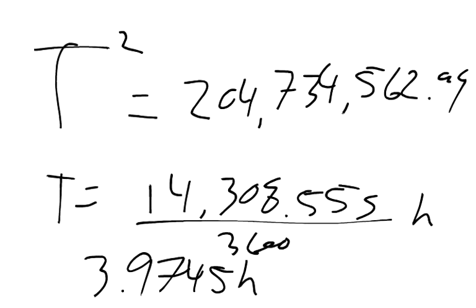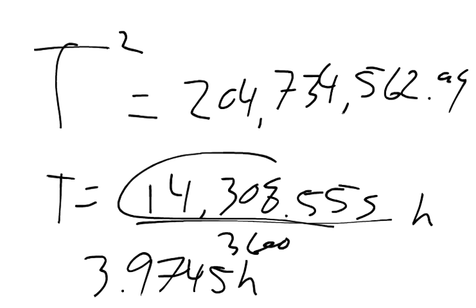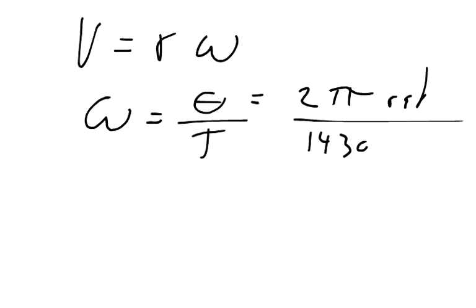And now we know what the orbital period is. We can calculate the speed. And so the speed, if you remember, the velocity equals the radius times the angular speed. And the angular speed equals the angular displacement divided by the time. And so we want to do time in seconds. Angular displacement is 1 revolution, which is equal to 2 pi radians. So 2 pi radians divided by the time, which we said the time was 14,308.55.